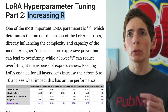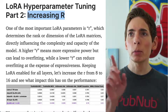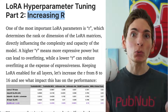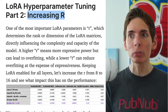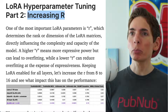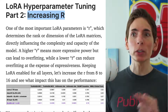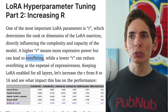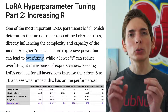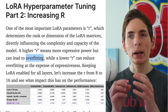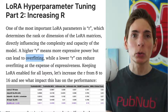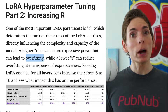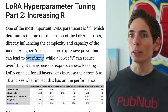With LoRA fine-tuning, increasing the hyperparameter R (the rank) seems to be the most important hyperparameter. The problem with increasing it too much is that you'll have some overfitting, but if you get it just right, it allows you to train the model with fewer iterations overall and gives you a good outcome.